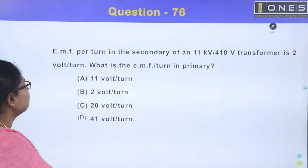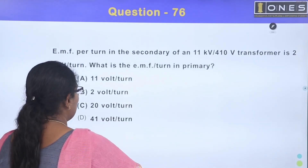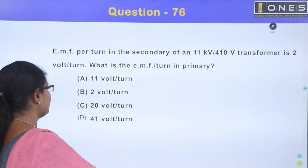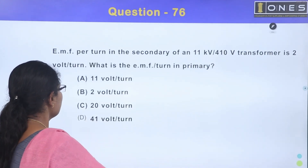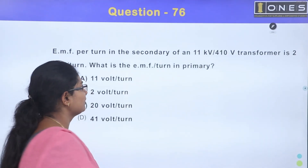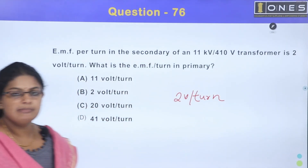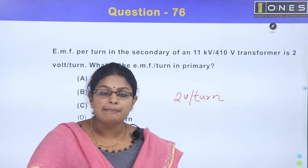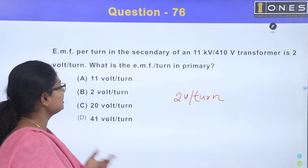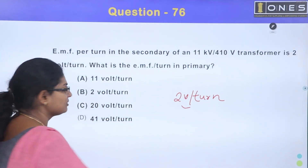EMF per turn in the secondary of an 11KV/410 volt transformer is 2 volt per turn. What is the EMF per turn in the primary? Option A, 11 volt per turn; Option B, 2 volt per turn; Option C, 20 volt per turn; Option D, 41 volt per turn. The answer is Option B, 2 volt per turn.